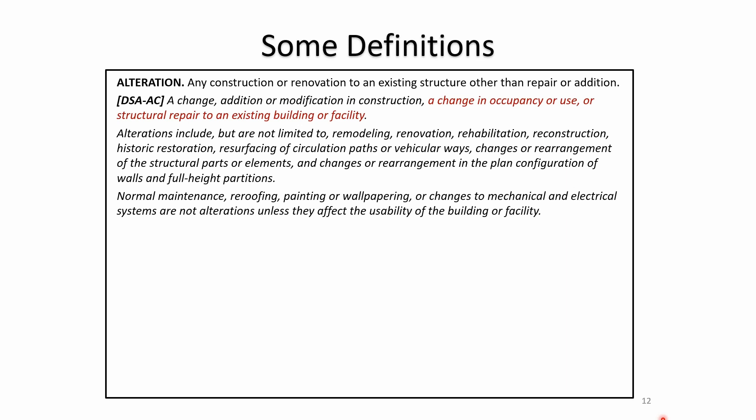The definition of an alteration, right out of the code, is important. The key piece shown in the CAN is a change in occupancy or use, or structural repair to an existing building or facility. That piece is central to the definition as we discuss these issues.